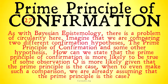Objection number 27 in this long-running series is that, as with Bayesian epistemology, there's a problem of circularity here. Imagine that we are comparing two different confirmation hypotheses — the prime principle of confirmation and some other hypothesis. How can we state that the prime principle of confirmation is more likely to be true if some observation O is more likely given that the prime principle is the case, when to even make such a comparison, we are already assuming that the prime principle is the case?